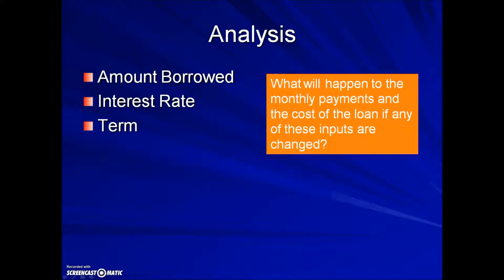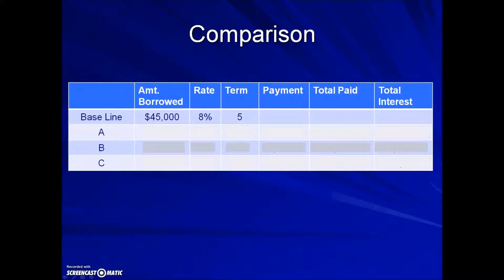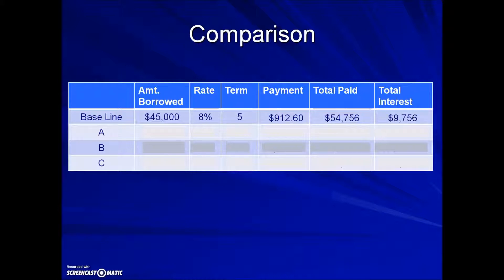The question we're going to look at is what will happen to the monthly payments and the cost of the loan if any of these inputs are changed. We'll start our comparison with a baseline: the amount borrowed is $45,000 at a rate of 8% for a five-year term. The monthly payment will be $912.60. The total amount paid is that monthly payment times 12 payments per year times 5 years, and subtracting the principal from the total paid gives us the interest.